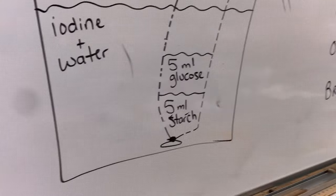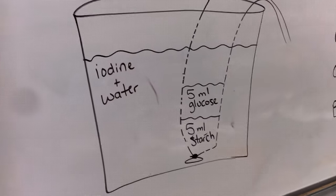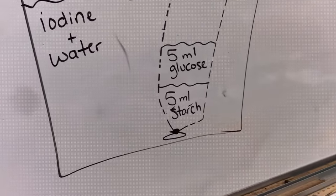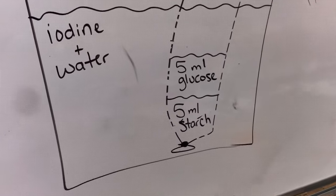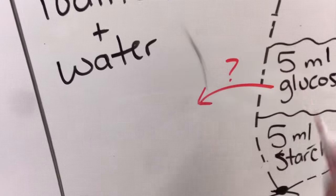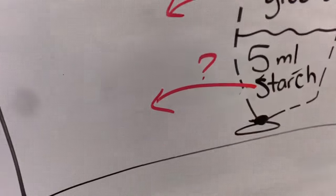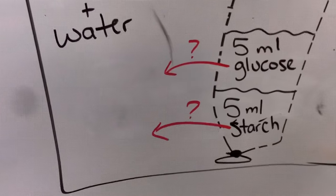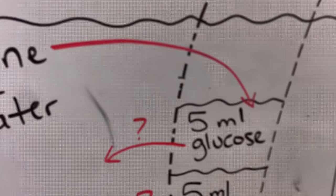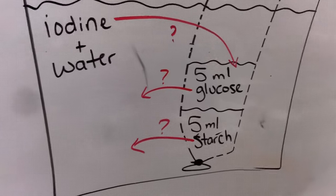Before going back to the dialysis membrane, I want to draw this on the whiteboard. We've got a cup filled with iodine and water, and in the dialysis membrane is five milliliters of glucose and five milliliters of starch — all mixed together, not layered. The three big questions: does glucose come out? Does starch come out of the dialysis membrane into the cup? Does iodine go into the dialysis membrane? We'll have to figure out a way to test each of these.